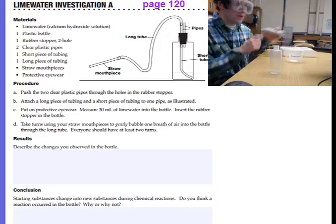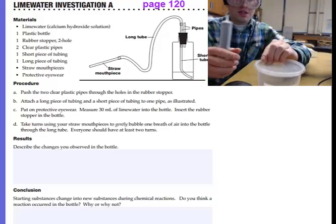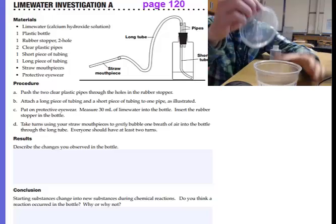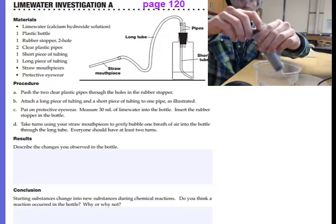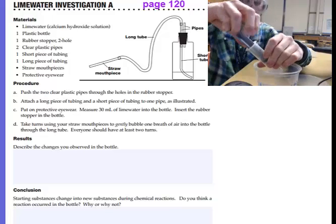And using a syringe and a container of limewater, you're going to take the top off the limewater and get 30 milliliters of limewater into your syringe.